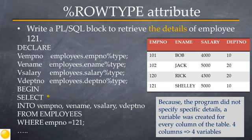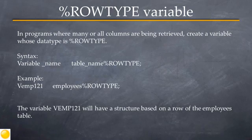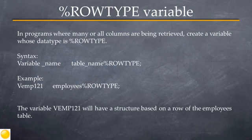If the table had many columns and you had to retrieve most or all of them, it would not be practical to create too many variables. To simplify this, you can use the %ROWTYPE attribute during variable declaration. Just like %TYPE, the %ROWTYPE variable is also associated with variable declaration. %ROWTYPE allows you to create a single variable whose structure is based on a row of a table. The syntax is: variable_name table_name%ROWTYPE.